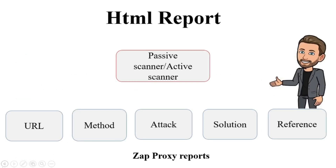HTML reports from ZAP proxy contain many useful pieces of information: 1) target endpoints, 2) methods of the used API, 3) attack parameters with value injections — important for understanding application threats, 4) solutions on how to prevent each possible threat for your application, and 5) references — articles from OWASP resources explaining why an issue can be important and dangerous. This is a brief explanation of how you can combine your security tests with your functional framework.